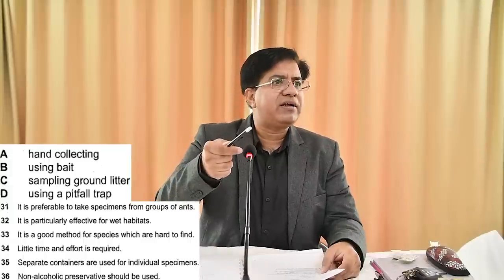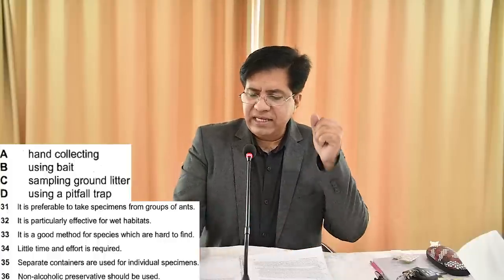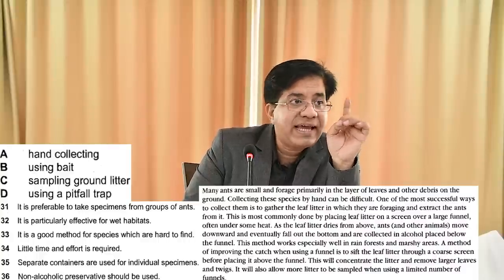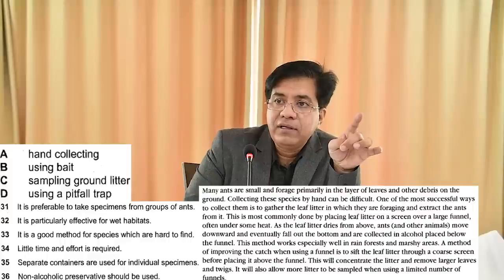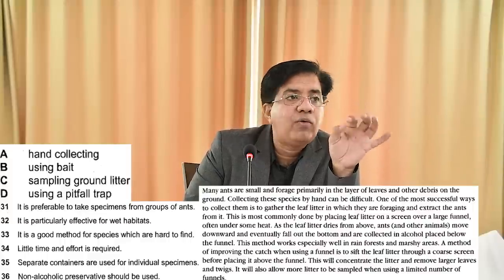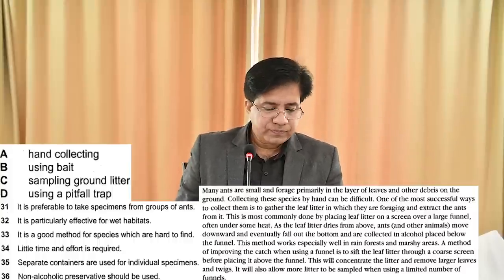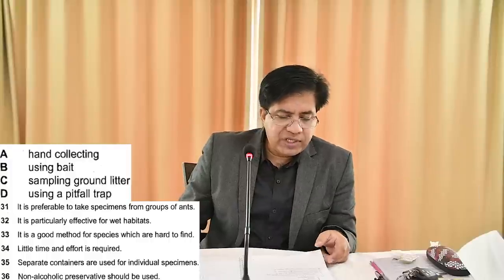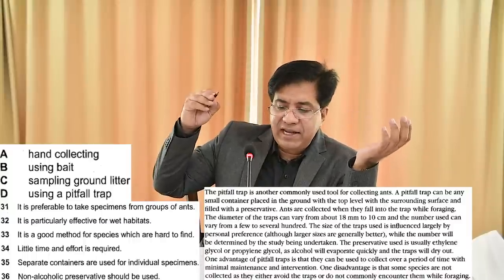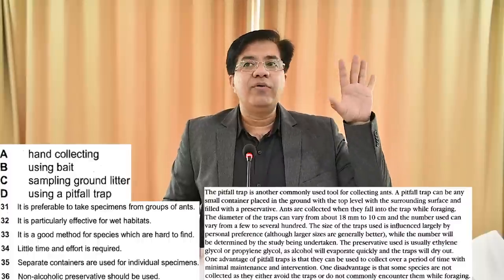Now come to option C: sampling ground litter. Ground litter means the leaves and debris on the ground. It's in the second last paragraph, first line — 'leaves and other debris on the ground' — underline that and write C. Then option D: using a pitfall trap — find it in the last paragraph, underline it, and write capital D.